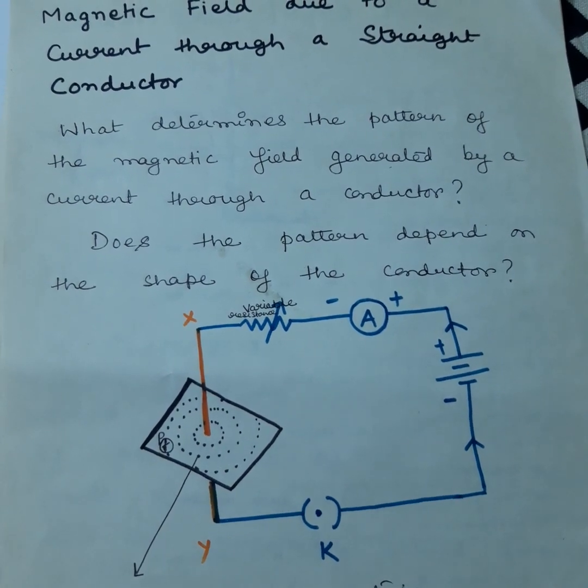Join all the things with the help of connecting wires. Now insert the thick copper wire through the center, normal to the plane of a rectangular cardboard. The cardboard should be fixed and must not slide up or down. The copper wire should pass through the center of the cardboard such that it is perpendicular to the plane of the rectangular cardboard.